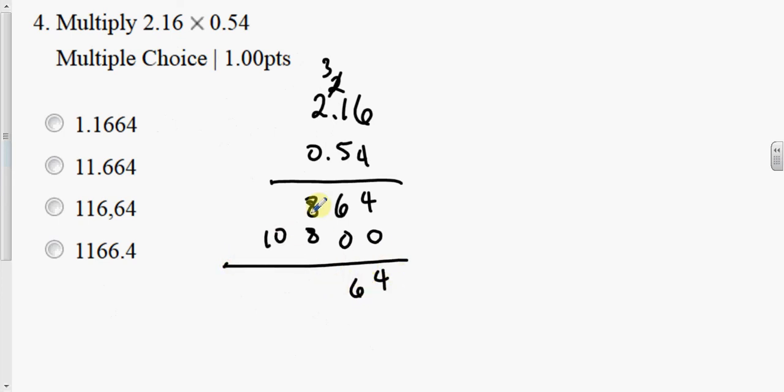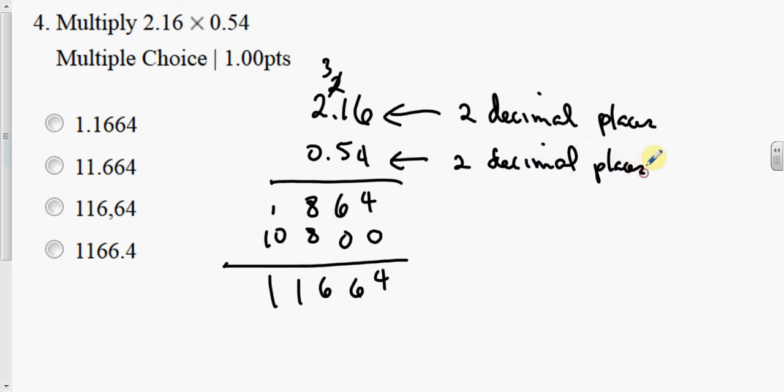Draw a line we add. 4, 6, 8 plus 8 is 16. Carry the 1. Bring down the 1. And we're going to add the decimals. Over here I have 2 decimal places. Over here I have 2 decimal places. So the answer would be 2 plus 2.